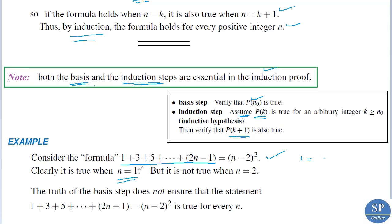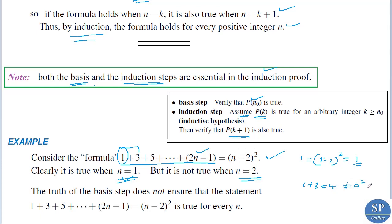For n equals 1, the left-hand side is 1, and the right-hand side is (1 minus 2) squared, that is (minus 1) squared, which is 1. So for n equals 1, this statement appears true. But this statement is not true for all n. For example, for n equals 2: the left-hand side is 1 plus 3 equals 4, and the right-hand side is (2 minus 2) squared equals 0. So 4 is not equal to 0, meaning this is not true for n equals 2.